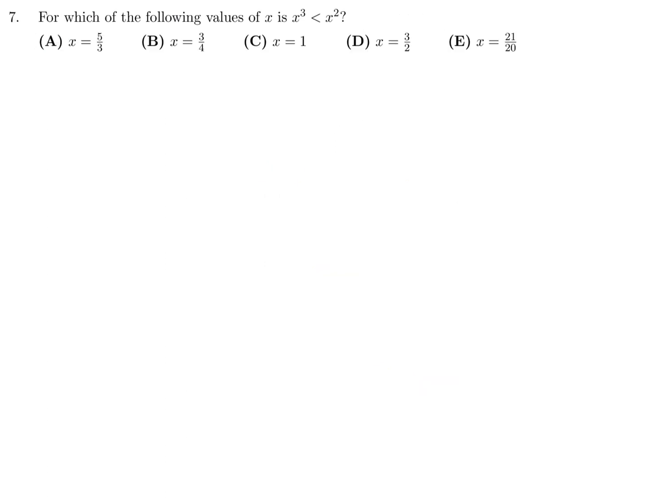For which of the following values is x³ < x²? Well, the first thing we can do is divide through by x² on both sides. And when you do, on this side you have x, on this side you have 1. So, x has to be less than 1. Of the answer choices, the only answer choice that is less than 1 is B. Number 7 is B.